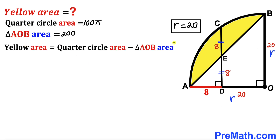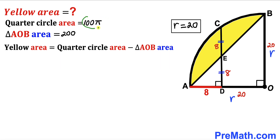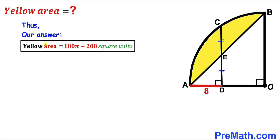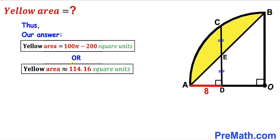In our final step, the yellow shaded area equals the quarter circle area minus triangle AOB area: 100π − 200. That is approximately 114.16 square units. Thanks for watching, and please don't forget to subscribe to my channel for more exciting videos!